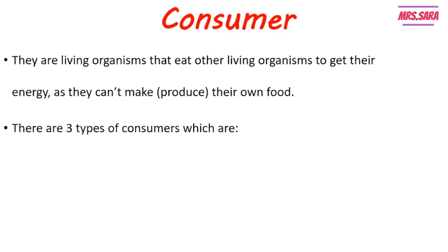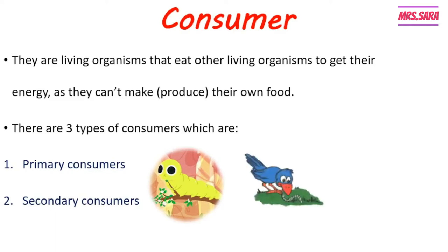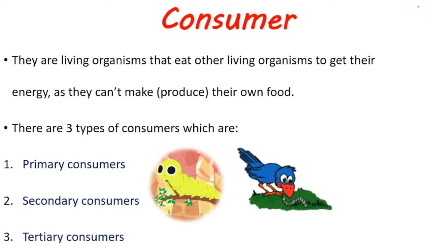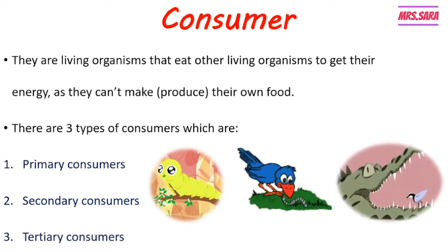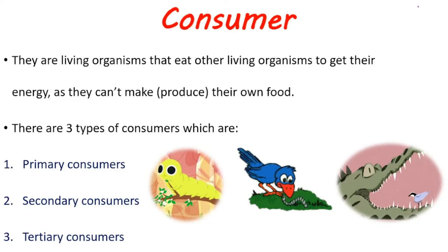There are three types of consumers in the ecosystem: number one, primary consumers, like insects or worms; number two, secondary consumers, which feed on primary consumers, like a bird eating a worm; and number three, tertiary consumers, like a crocodile eating a bird.